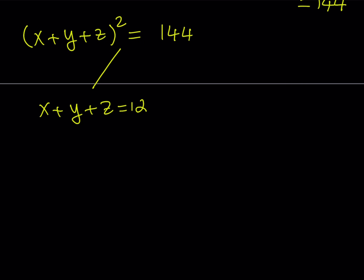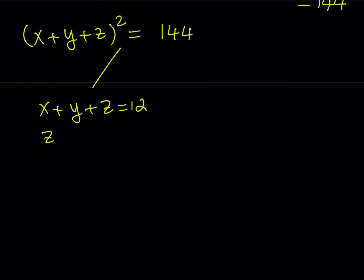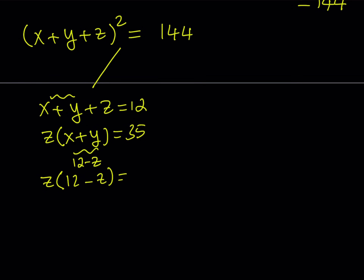The second equation is xz plus yz, so I can factor out z and write it as z times the quantity (x plus y) equals 35. Putting these two together, from the first equation I can isolate x plus y and write it as 12 minus z. This gives me z times (12 minus z) equals 35.